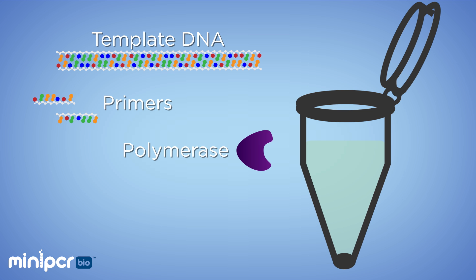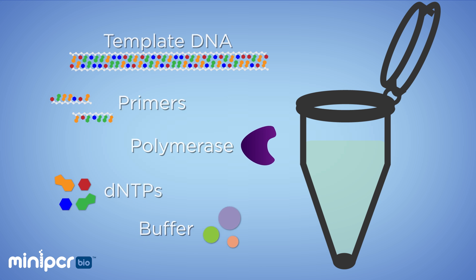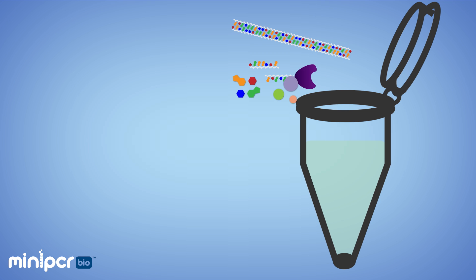We need the TAQ polymerase, which will do the copying. We also need lots of spare nucleotides, or dNTPs, the building blocks of DNA. These are the molecules the polymerase will add to the growing DNA strand. Finally, all this happens in a special buffer, which contains salts and ions that help keep the polymerase functioning.